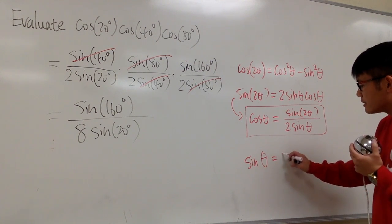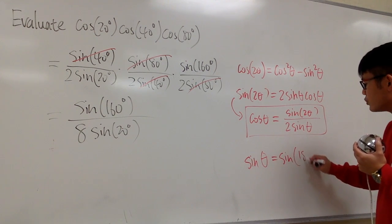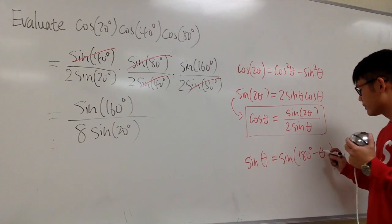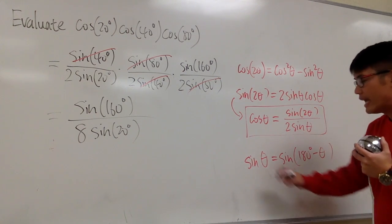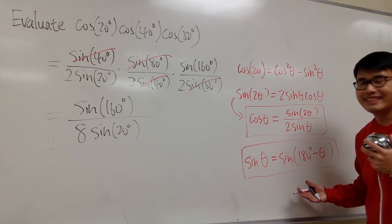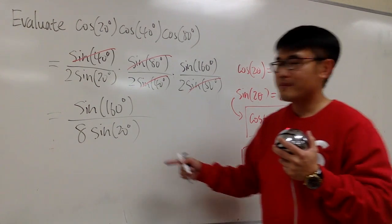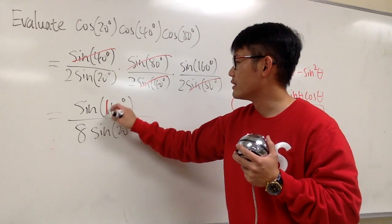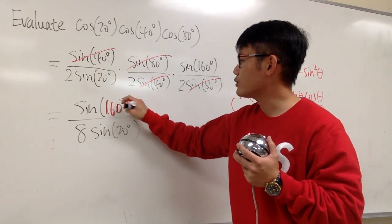Sine of θ, it's the same as sine of 180 degrees minus whichever that angle was. And this is also another identity we have to use. So, you can look at this right here. It's the θ, which is 160 degrees, right?